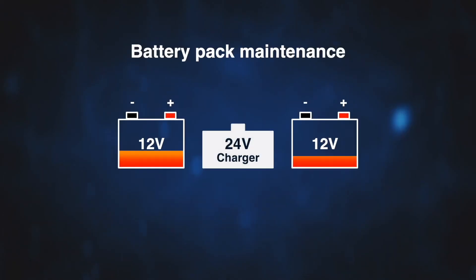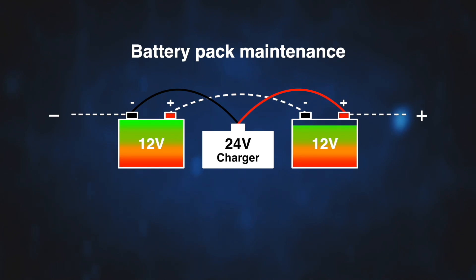There are two ways to equalise the voltage difference if one is detected. Firstly, fully charge the pack with a 24V charger, then bring up the lowest battery with a 12V charger. There is no need to disconnect the series connection to do this if you can access just the battery with the lowest voltage.